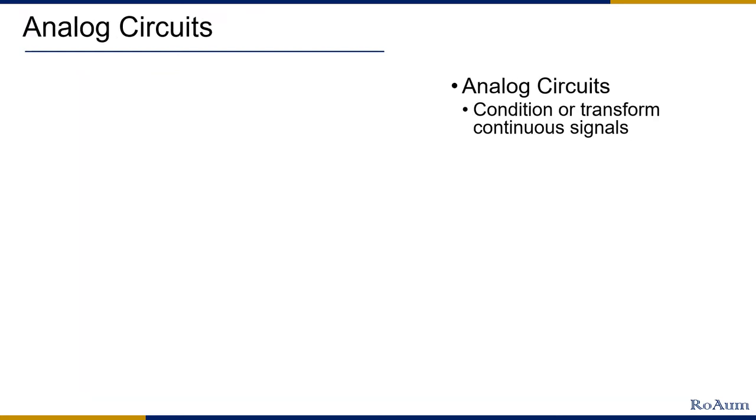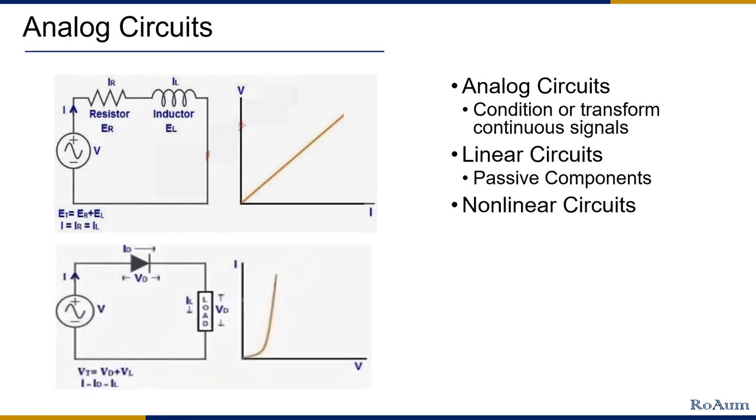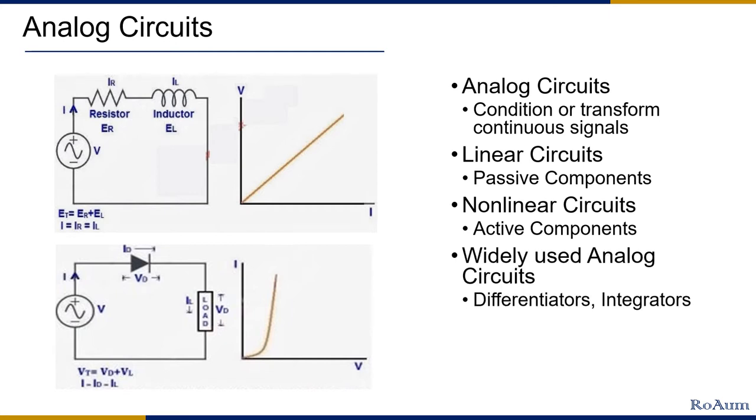Analog circuits typically condition or transform continuous electrical signals by employing different electronic techniques. Linear circuits modify the characteristics of signals while maintaining a linear relationship between voltage and current by using resistors, capacitors and inductors, also known as passive components. On the other hand, non-linear circuits alter the relationship between voltage and current by employing active components like diodes, transistors and FETs. Differentiators, integrators, clippers, clampers, amplifiers and oscillators are some of the regularly used analog circuits.